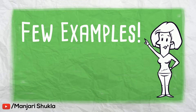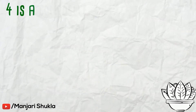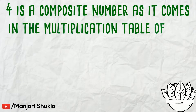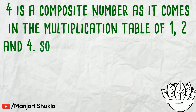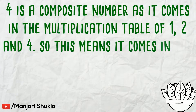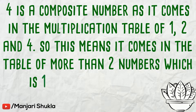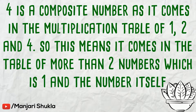Few examples. Four is a composite number as it comes in the multiplication table of one, two, and four. So this means it comes in the table of more than two numbers, which is one and the number itself. This leads to the answer that four is a composite number.